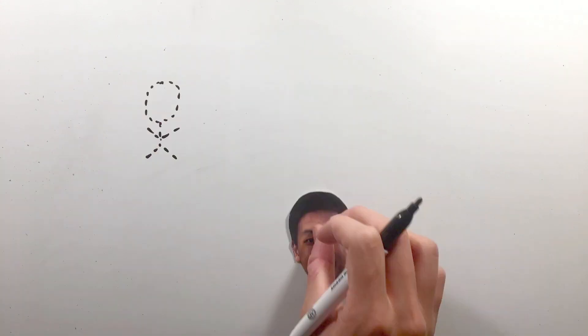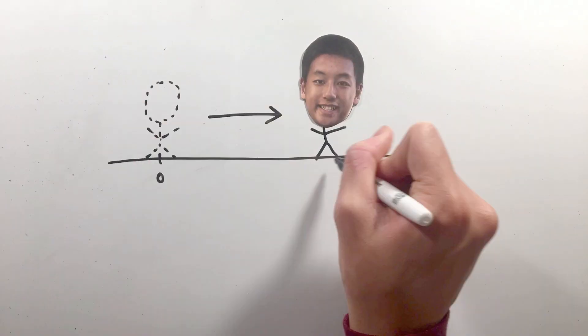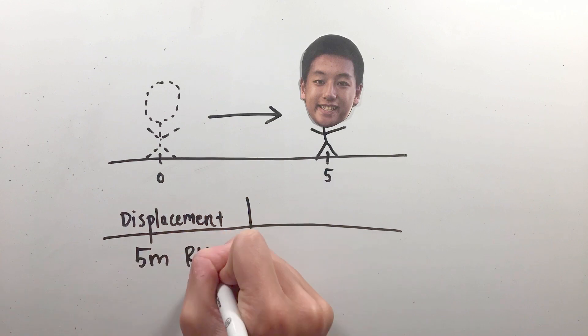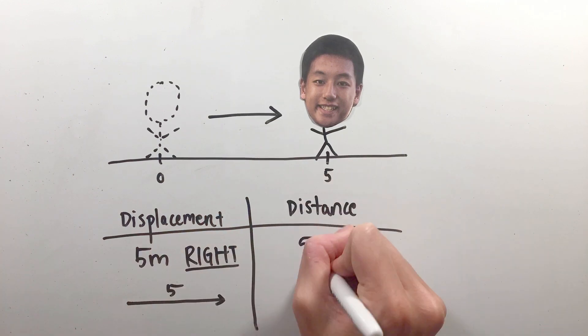The difference between these two is that displacement is what's known as a vector, meaning it has a magnitude and a direction attached to it, while distance is a scalar, meaning it only conveys a magnitude.